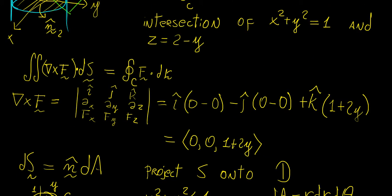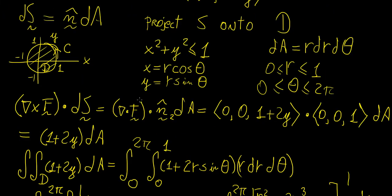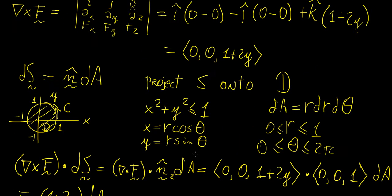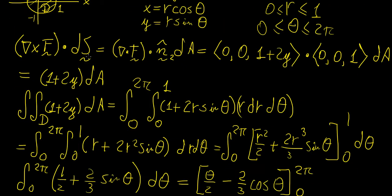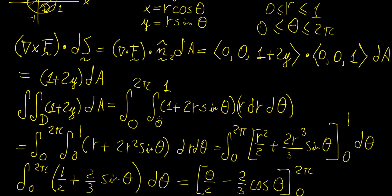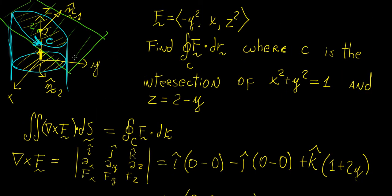So we found the line integral on this tilted curve C by projecting it onto the xy-plane and applying Stokes' theorem to get the curl of the vector field, then evaluating a double integral. This works both ways and serves to simplify problems where parametrizing the curve is difficult. As long as you understand the main theorems and the connections between surface integrals and line integrals, you can solve virtually any problem in vector calculus.